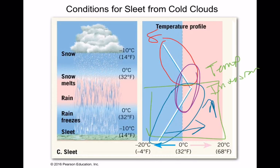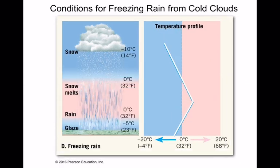Which one we get depends on how deep that temperature inversion is. In this case, the temperature inversion was pretty high up, meaning there's a fair bit of cold region for the precipitation to pelletize — that gives us sleet, or ice pellets, which are the same thing. It started as snow, melted, and refroze. Now compare that depth with this shallower one — right here, where you get your chance to freeze is not very deep at all, so that gives you freezing rain, which freezes on contact.